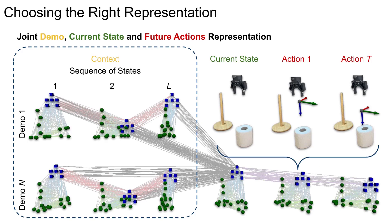When we combine all components of in-context imitation learning, we get a single graph that jointly represents the provided demonstrations or the context, current observation, and future actions in a structured and unified way.